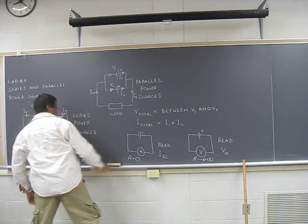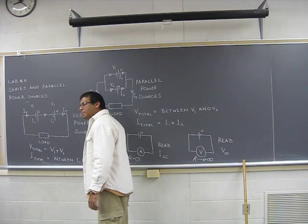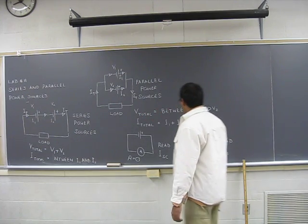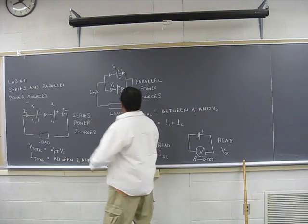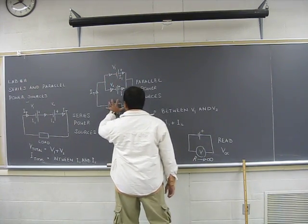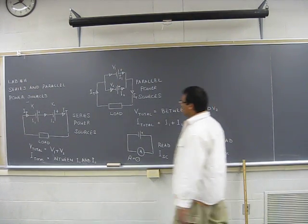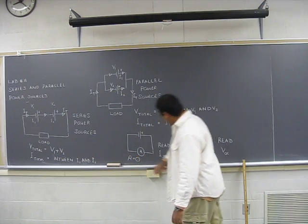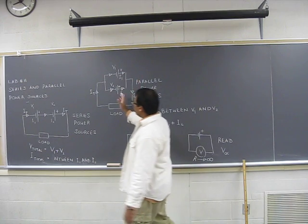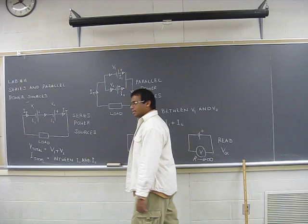Whenever I want to read the current, you have a series power supply - think of these two together and then attach your ammeter here. Next attach the voltmeter. For parallel power sources, think of this as a single power source. You attach your voltmeter here to get the open circuit voltage, you attach your ammeter here to get the short circuit current. You've got to do that individually and then together in two different sets of circuits.